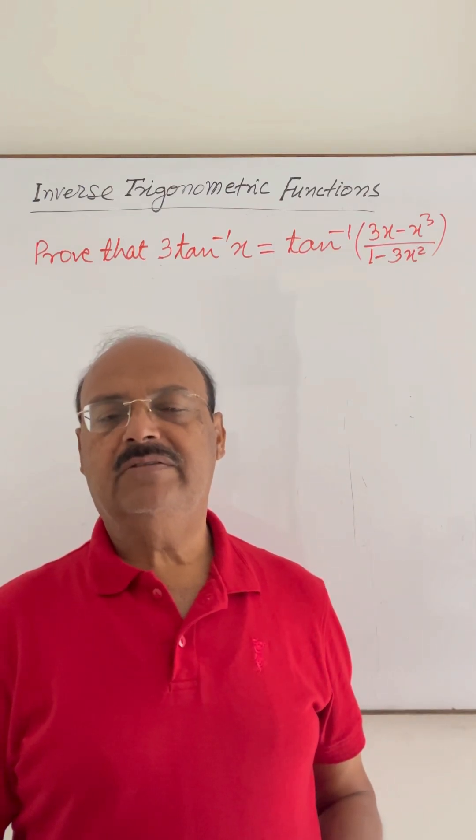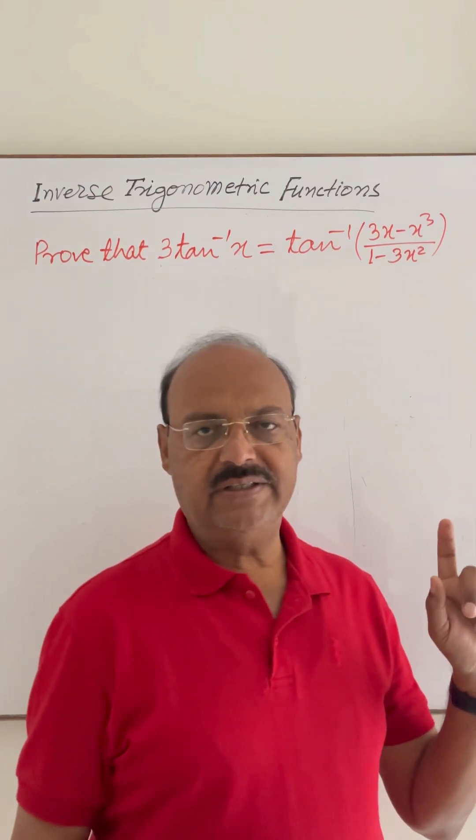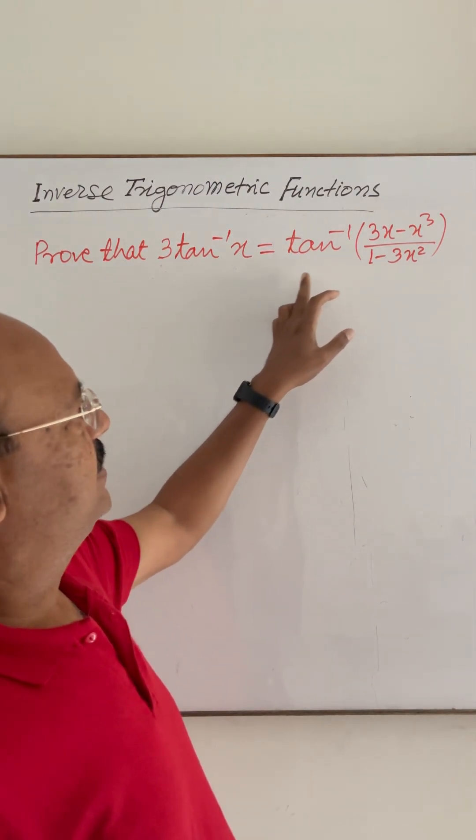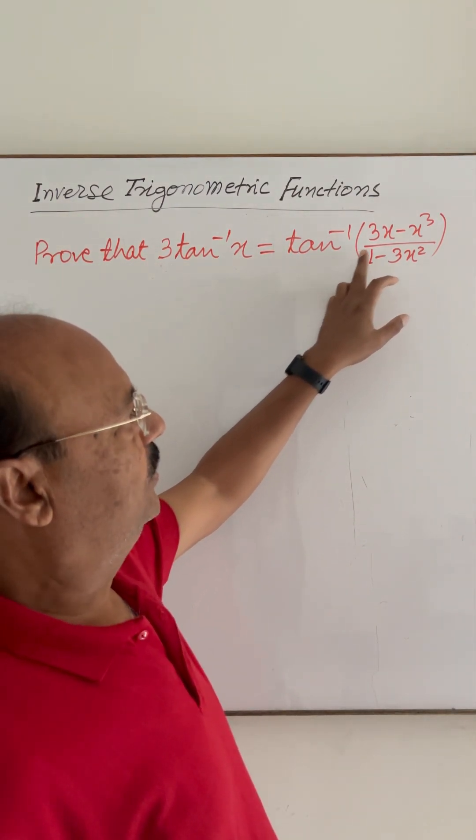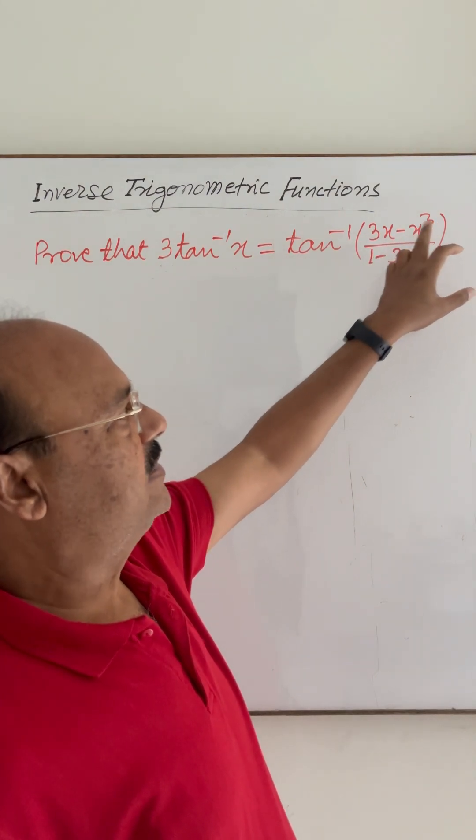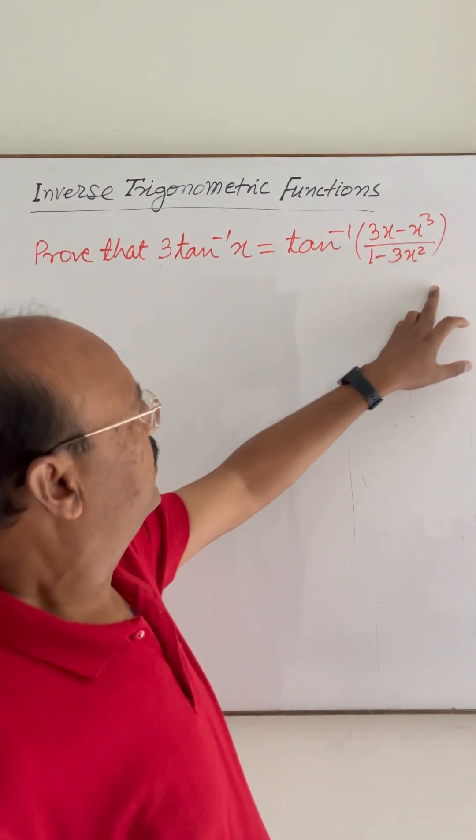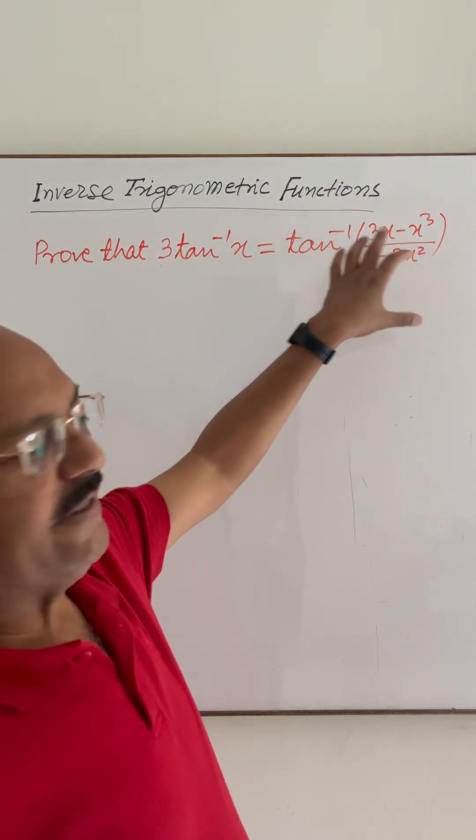Here is a question from the topic inverse trigonometric functions. Prove that 3 tan inverse x is equal to tan inverse of 3x minus x cube upon 1 minus 3x square. It is better to start with the right-hand side.